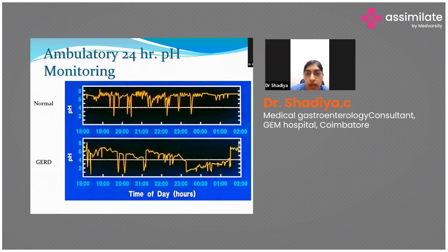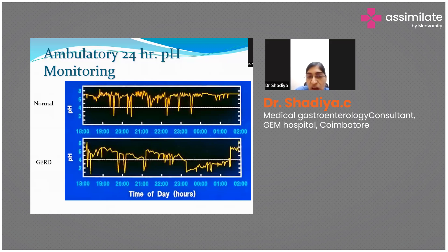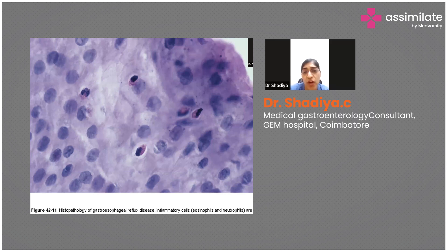In 24-hour pH monitoring, the normal tracing shows very little time with pH less than 4, whereas in a GERD patient the duration with pH less than 4 is much higher. The composite DeMeester score is used to calculate whether the patient has GERD. Histopathology of a GERD patient shows basal cell hyperplasia with neutrophilic and eosinophilic inflammation.